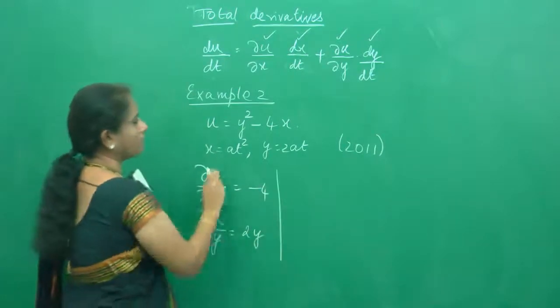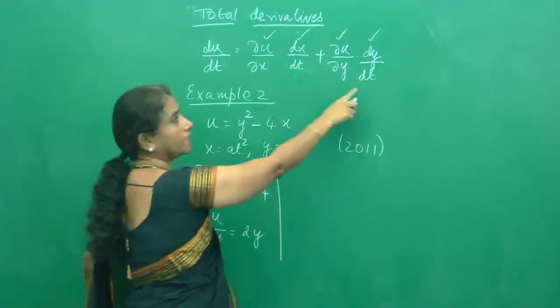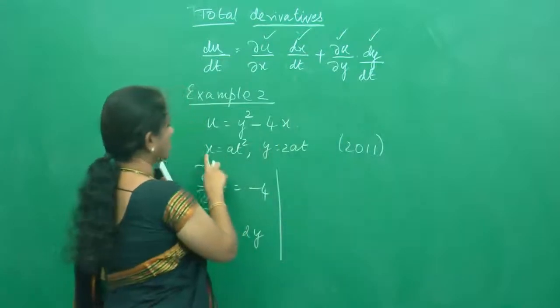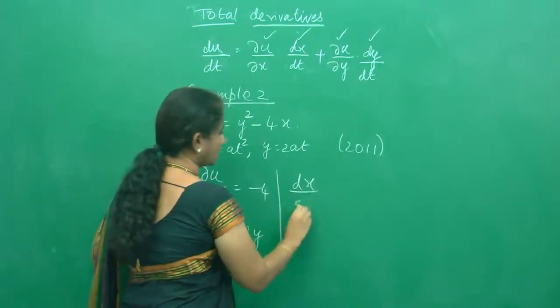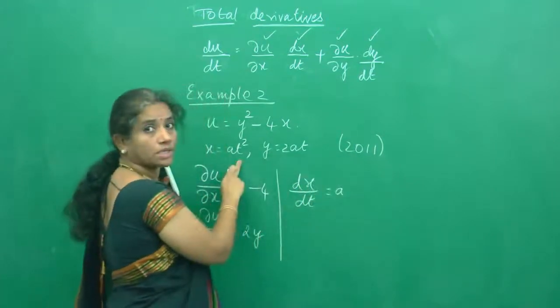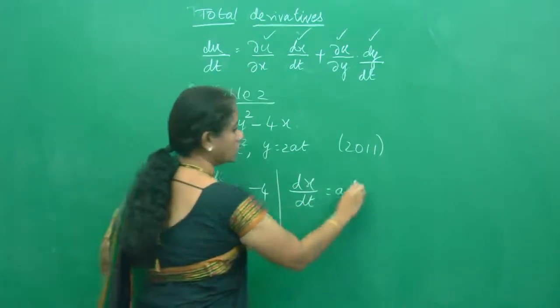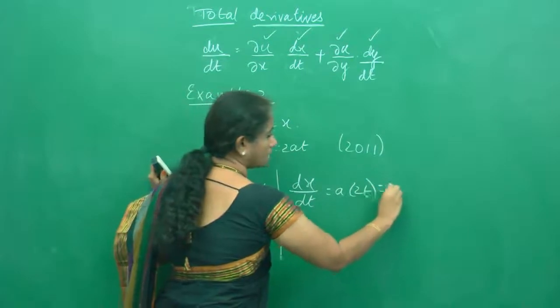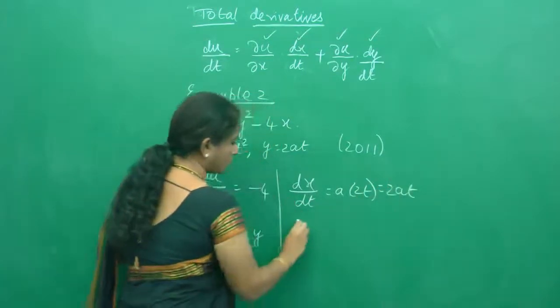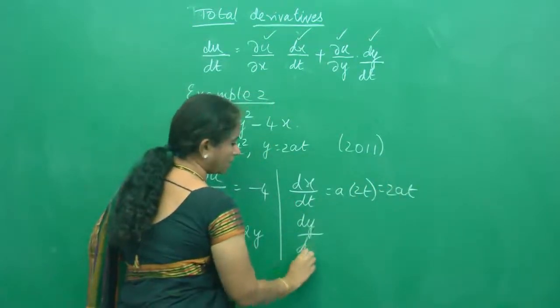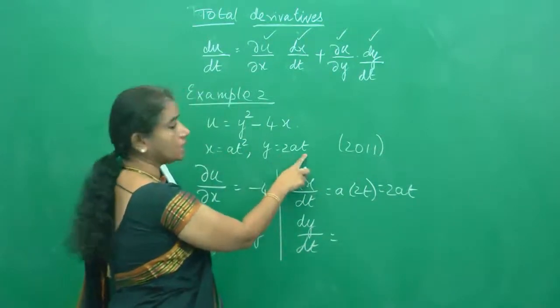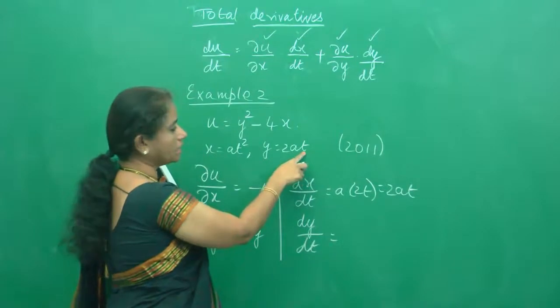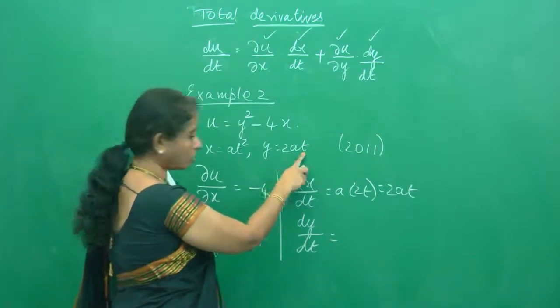And next you have, you want dx/dt and dy/dt. So what is dx/dt? It is very simple. dx/dt, a is a constant. What is the derivative of t square? It is 2t. So I can write it as 2at. So what is dy/dt? dy/dt is nothing but 2a is a constant. The derivative of t with respect to 2a is 1, so this is 2a times 1 which is nothing but 2a.